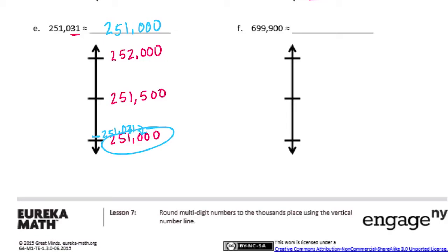And 699,900. So I'll have 699,000. If I add 1,000 to that, I'll end up with 700,000. Right in the middle would be 699,500. And 699,900 is going to be up here. Which means we will be rounding up to 700,000.